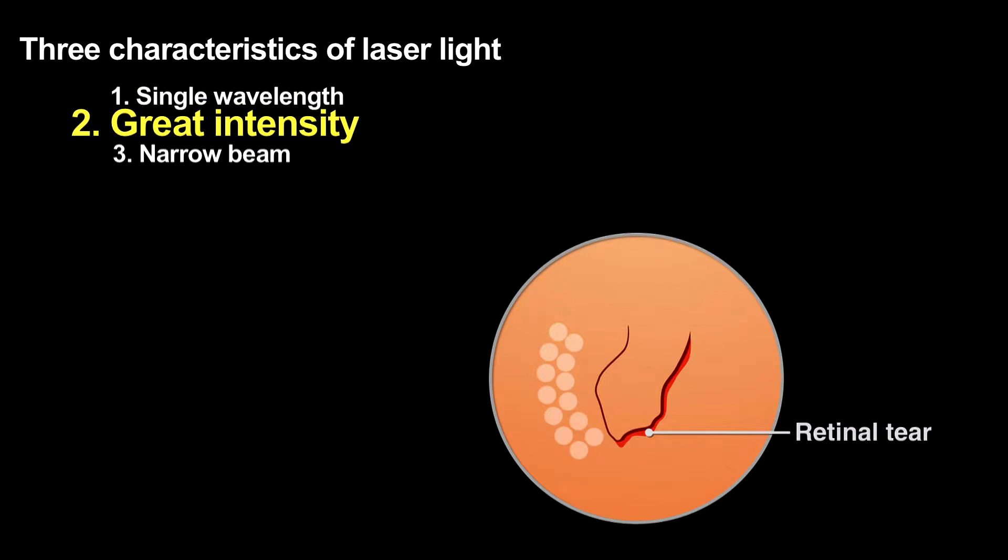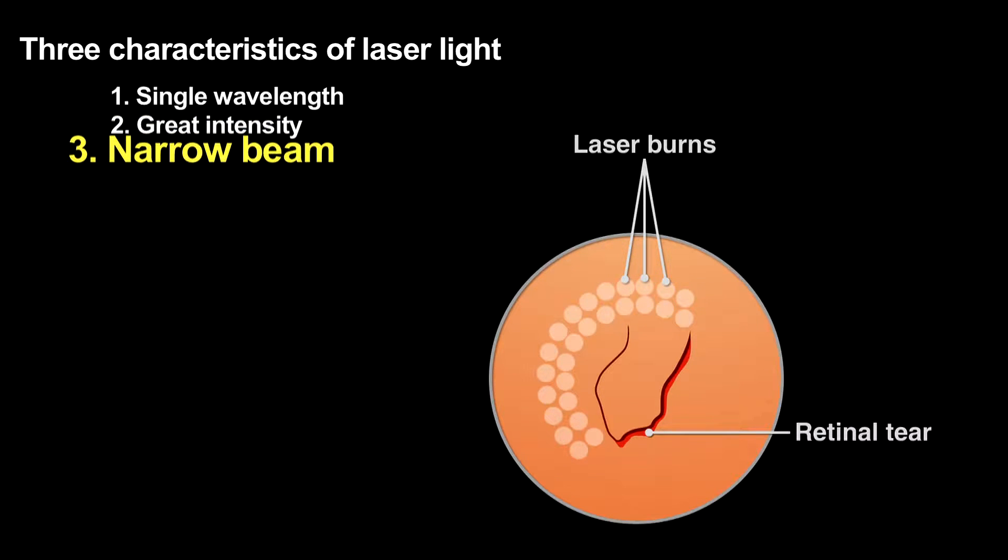The laser beam then strikes the retina where the tissue strongly absorbs that light, using the high-intensity light to weld the detached retina back into place. The beam's narrowness allows the surgeon to affect only the area of the retina that needs to be repaired, areas as small as 30 microns.